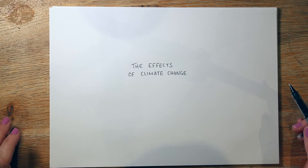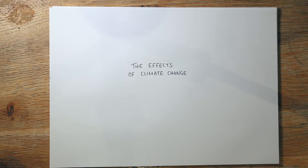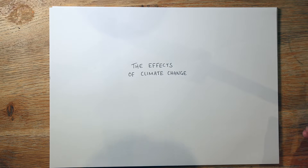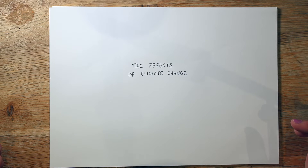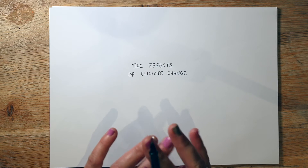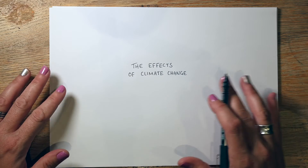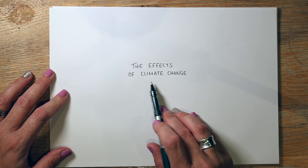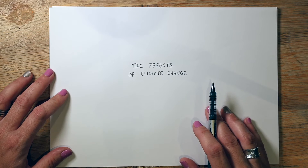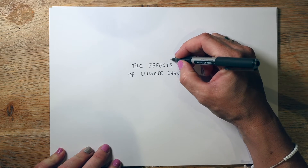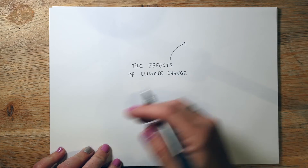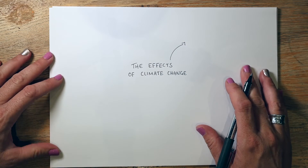Hey folks, so today I thought we'd have a look at the effects of climate change. One of my lovely subscribers asked if I could do this, and I thought, I don't know why I haven't — it's a great idea. It's a common question to come up in GCSE geography, so let's just get this one done. Instead of anything super complicated, just write the effects of climate change in the middle of your page and we're going to do this mind map style with lots of arrows.